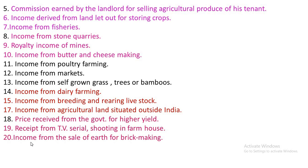Number 19 — Income received from TV serial shooting in a farmhouse: Whatever income received by the owner of the farmhouse shall be treated as non-agricultural income. Number 20 — Income from the sale of earth for brick making: If agricultural land is let out to somebody for taking mud for the purpose of producing tiles or brick making, whatever income received from that party shall be treated as non-agricultural income.